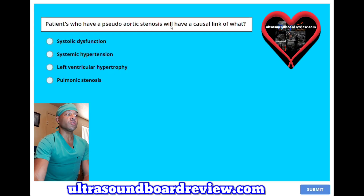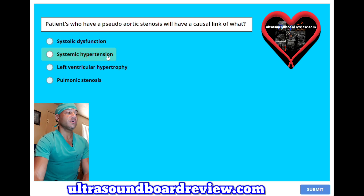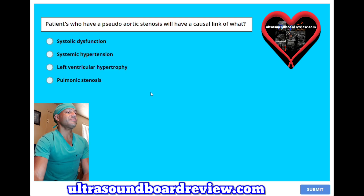Patients who have a pseudo-aortic stenosis will have a causal link of what? A, systolic dysfunction; B, systemic hypertension; C, left ventricular hypertrophy; or D, pulmonic stenosis? The answer is A, systolic dysfunction.